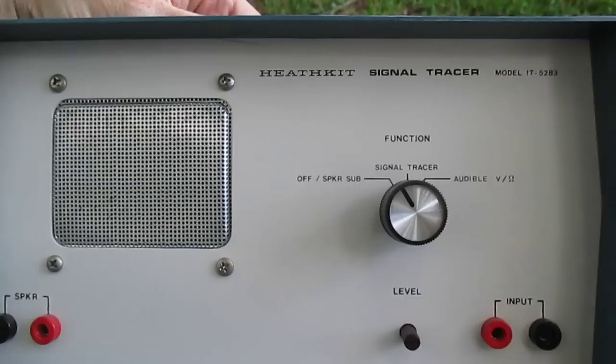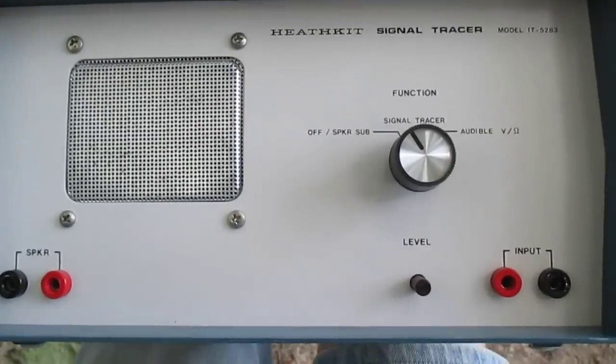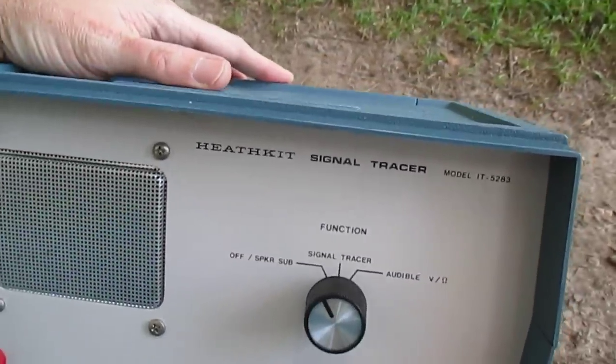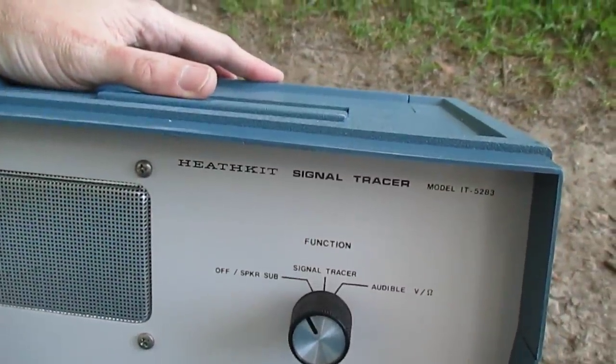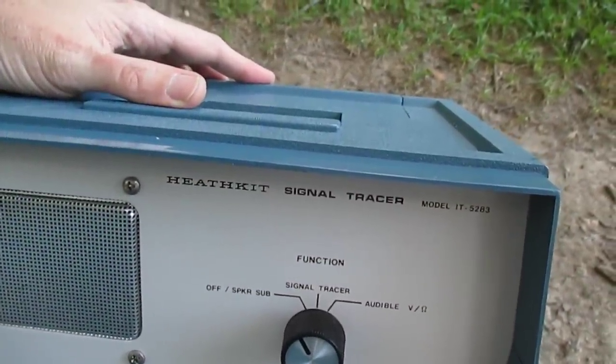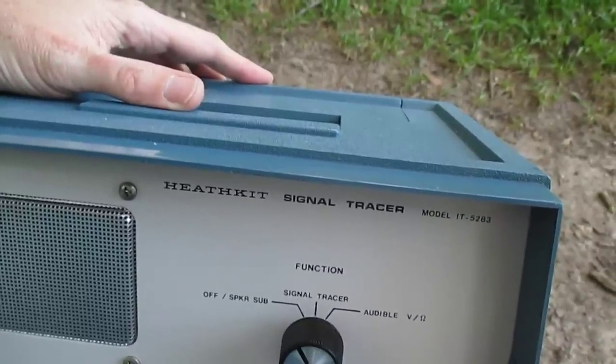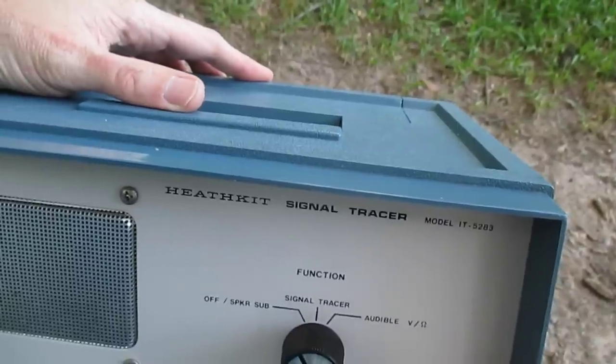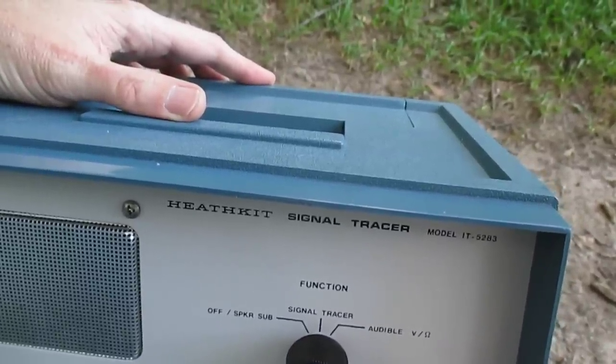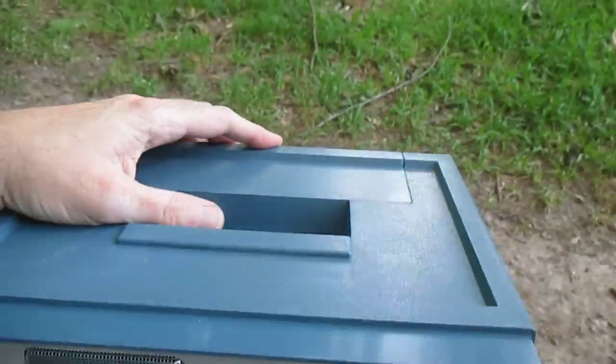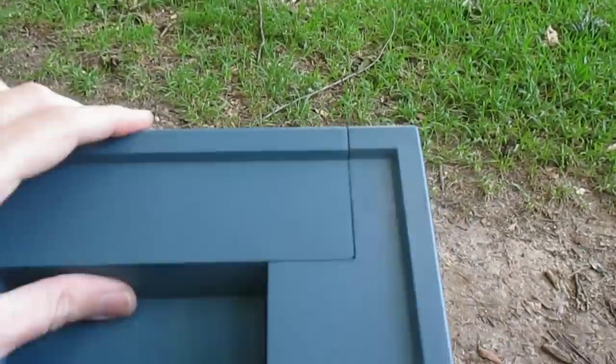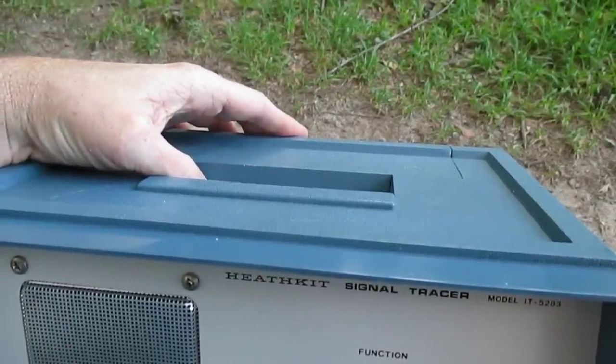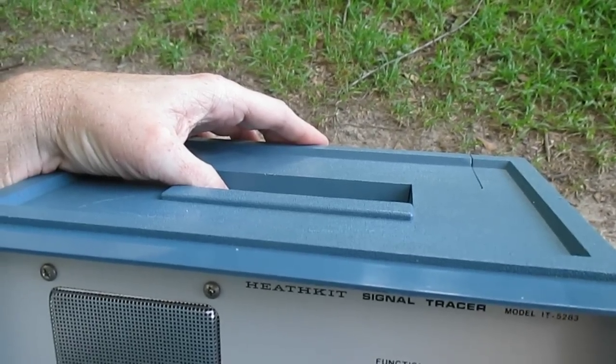Okay while we're waiting on the bottom to fall out we can talk about some advantages to a little signal tracer like this. One of the advantages is this is a lightweight battery powered model which means if I decide to use it outdoors where I may not have access to electrical outlets I can do so. And also since this is battery powered we won't have to worry about issues with isolating the radio from the power line in the case of hot chassis.